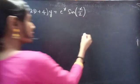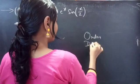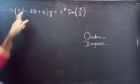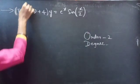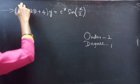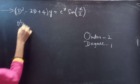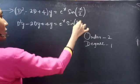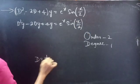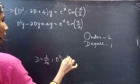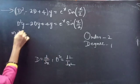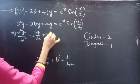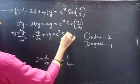Firstly, let's find the order and degree of the given differential equation. The highest derivative here is d², so the order is 2 and the highest power of the highest derivative is the degree, which is 1. We can write the given differential equation as d²y/dx² - 2(dy/dx) + 4y = e^x · sin(x/2).